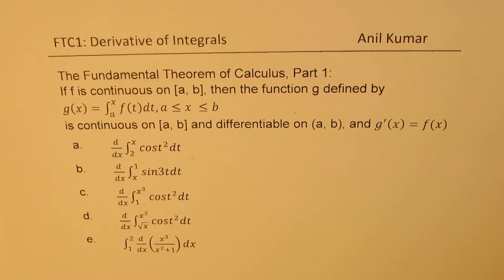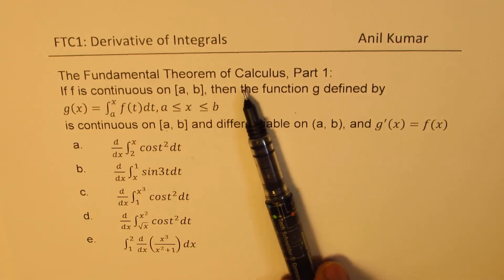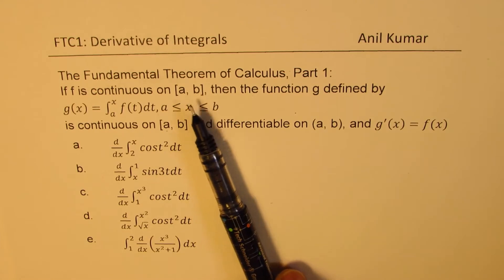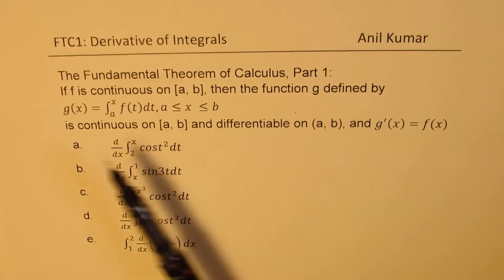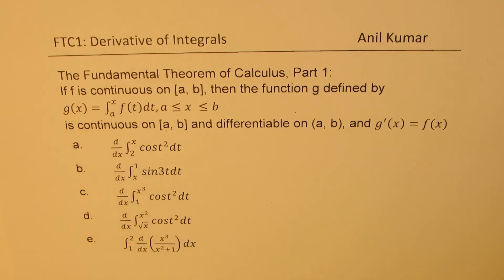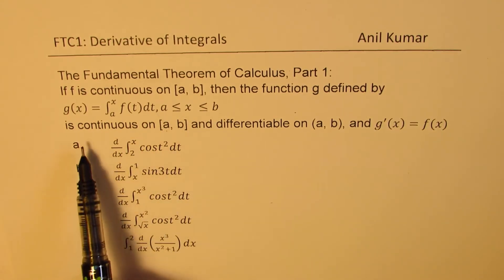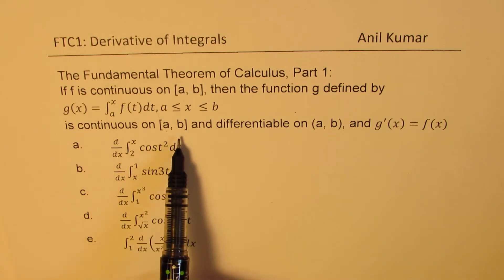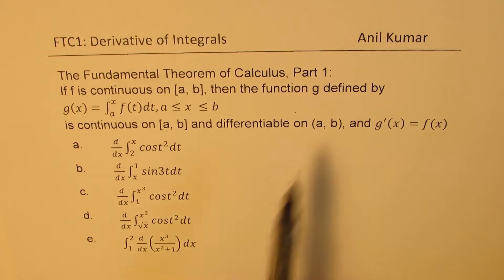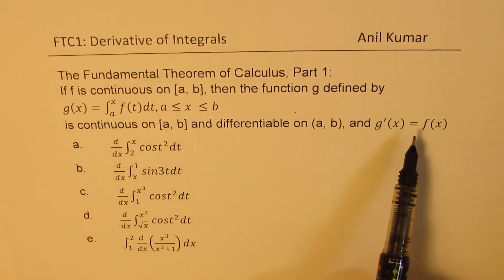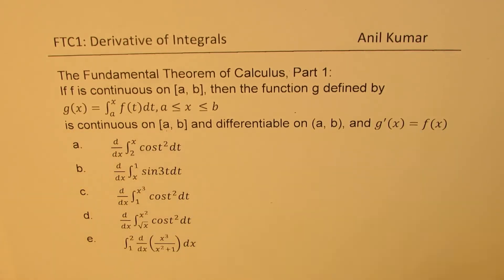The most important application here is to find the derivative of the integral itself. The Fundamental Theorem of Calculus, Part 1 states that if f is continuous on closed interval a to b, then the function g defined by g of x equals the integral from a to x of f of t dt, where x is between a and b, is continuous on the closed interval and differentiable on the open interval of a and b. The derivative g prime of x is equal to the integrand itself.